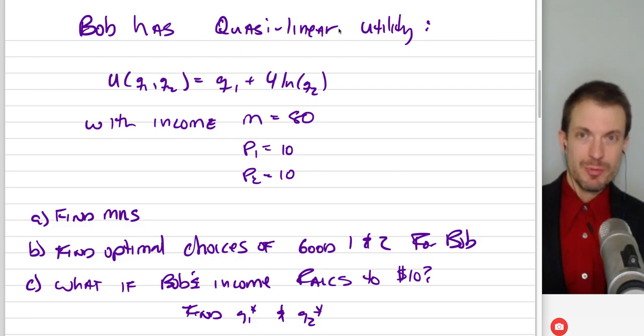Suppose we have Bob with quasi-linear utility. We have two goods, good one and good two. Q1 and Q2 correspond to the amounts of good one and good two that we're consuming. These preferences are linear in good one and they're a log in good two. So the utility function is Q1 plus 4 times the natural log of Q2. Bob's income is 80 and the price of good one is 10, price of good two is 10.